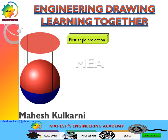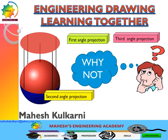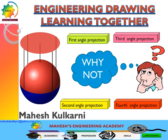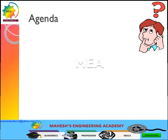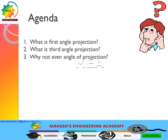Traditionally we know that there is a first angle projection and third angle projection. Did you ever think — why not a second angle projection? Or for that matter, why not a fourth angle projection? The agenda for discussion would be to understand what is first angle projection, what is third angle projection, and by using those principles, let us examine why not even angle projections. We will also look at some salient points to remember. If you have any questions, please feel free to post them.